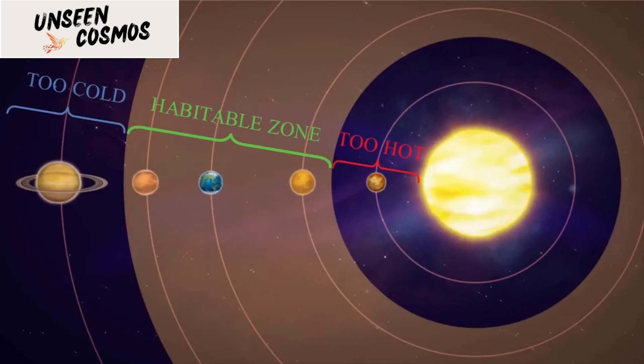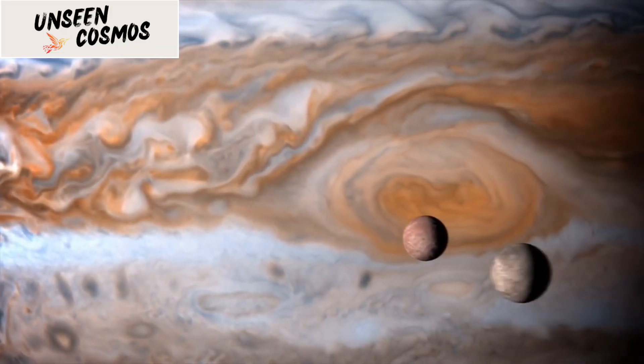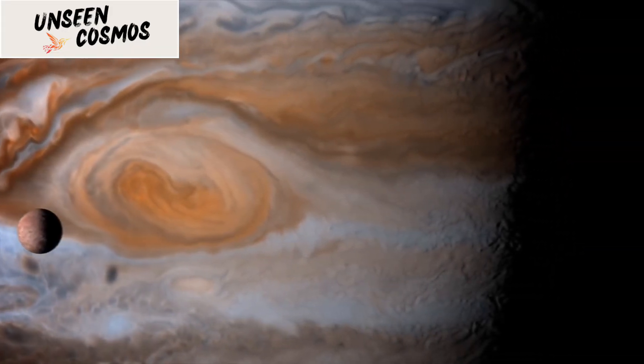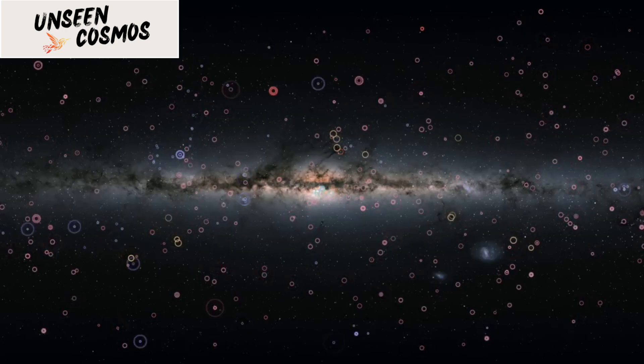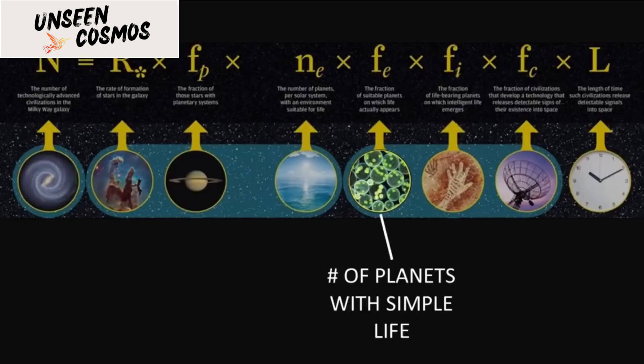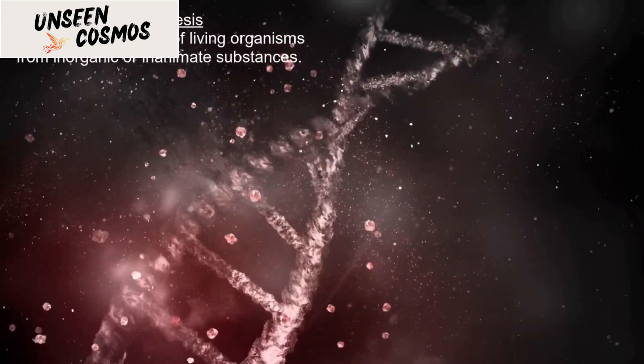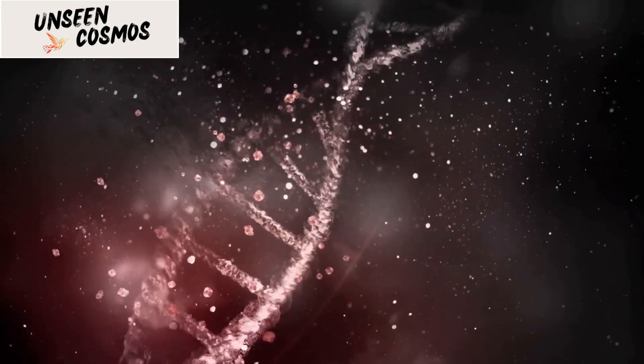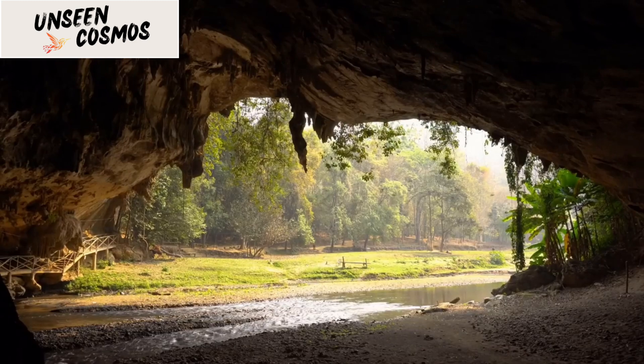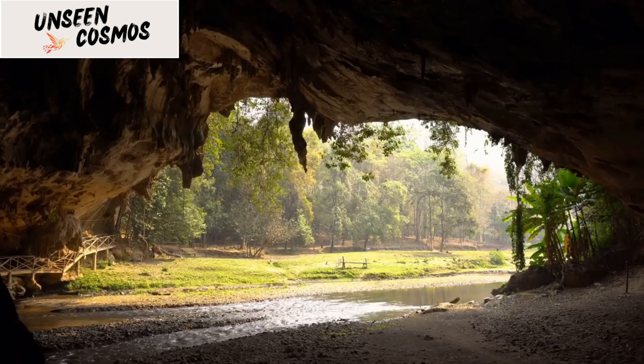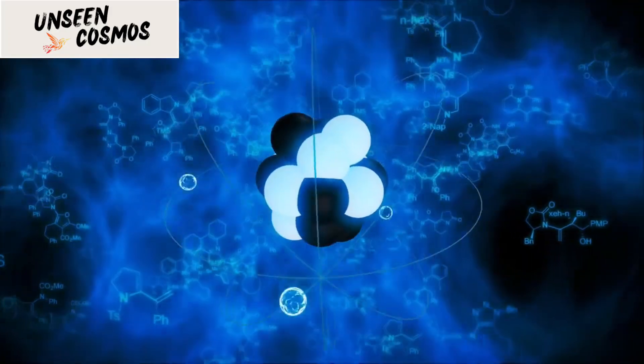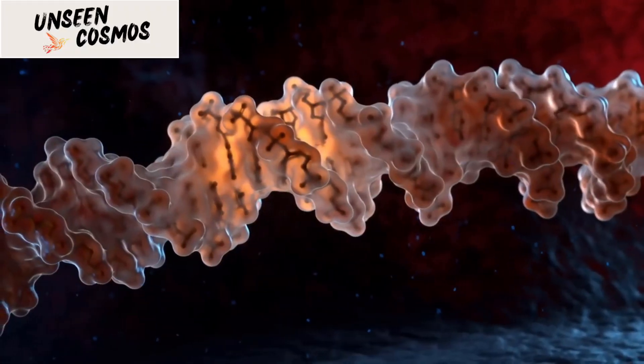Furthermore, it is plausible that we are simply not looking in the right way or at the right place. Our current methods of searching for extraterrestrial life primarily rely on detecting radio signals or searching for biosignatures. However, there could be alternative forms of communication or technology that we are unaware of. Additionally, our observations are limited to a relatively small portion of the galaxy, and there might be civilizations elsewhere that we have not yet encountered.